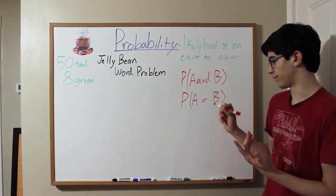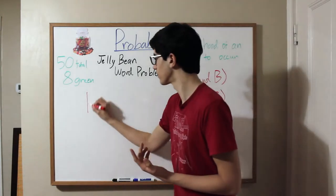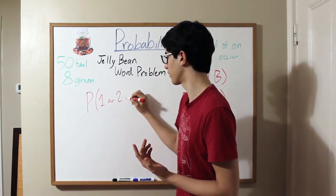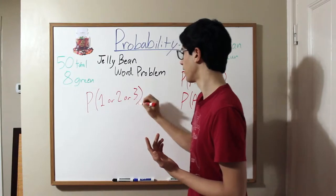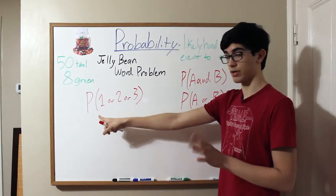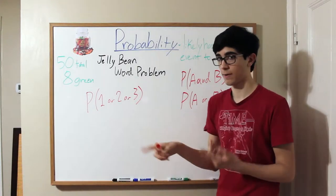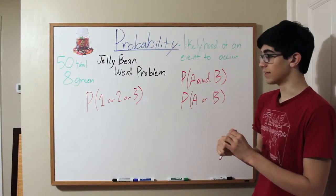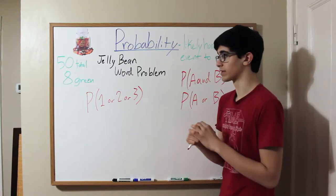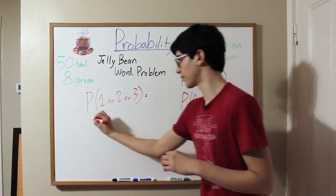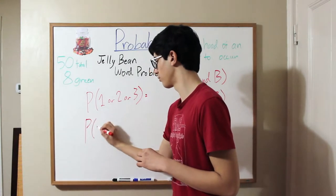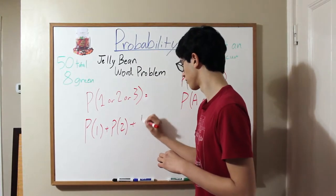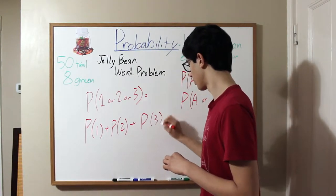Your first instinct might be to find the probability of getting it on the first try, or getting it on the second try, or getting it on the third try, right? Because either you get a green jelly bean on the first try, the second try, or the third try. Well, this is incorrect, and we're going to discuss why that is. Let's calculate that: probability of these three would be probability of one plus probability of two plus probability of three.